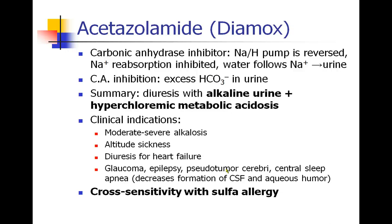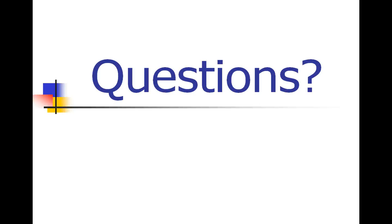That's about all I want to say about acetazolamide. I wouldn't test you very much on this except to understand the basics of carbonic anhydrase and to understand that, as a result, it makes the urine alkaline. Take a moment to consider if you have any questions to email me or discuss in class, and then we'll move on.